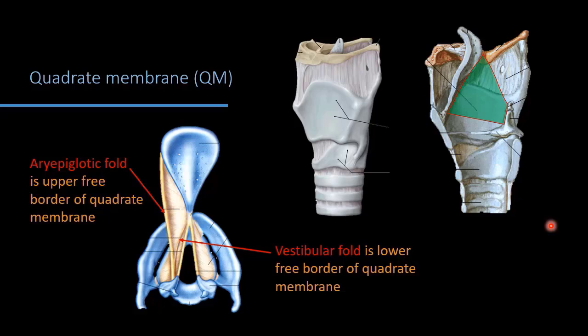The lower free border is the vestibular fold. We shall see the three folds — aryepiglottic fold, vestibular fold, and vocal fold — as they appear after covering with mucous membrane inside the laryngeal cavity. In sagittal section, all unpaired cartilages are cut in the midline: epiglottis, thyroid, and cricoid. The paired cartilages on the right side — arytenoid, corniculate, and cuneiform — are seen. The quadrate membrane has upper and lower free borders; the conus elasticus has its upper free border.